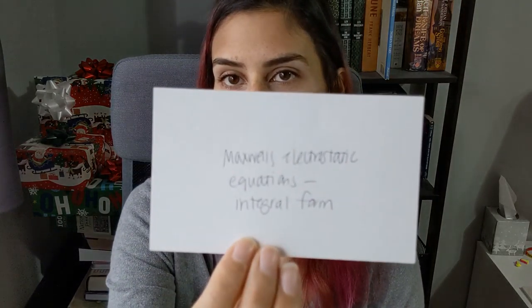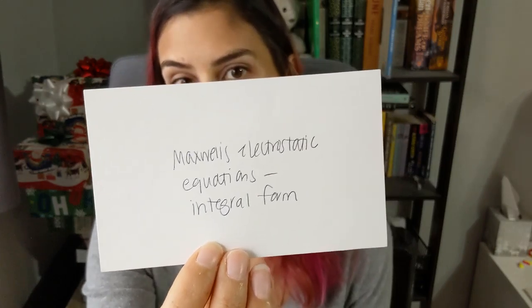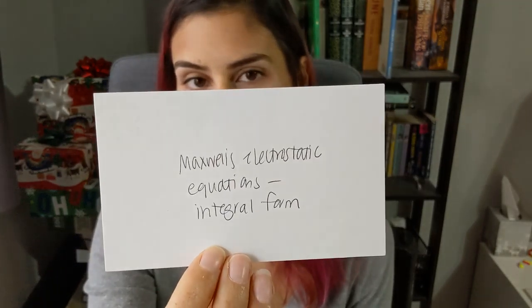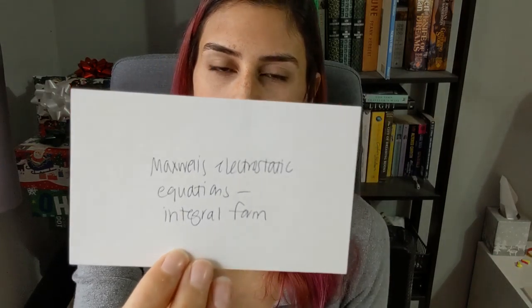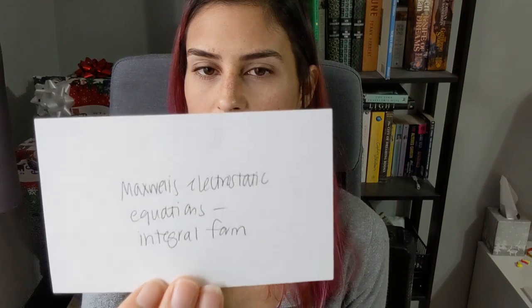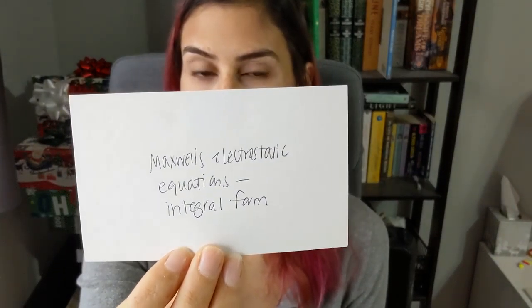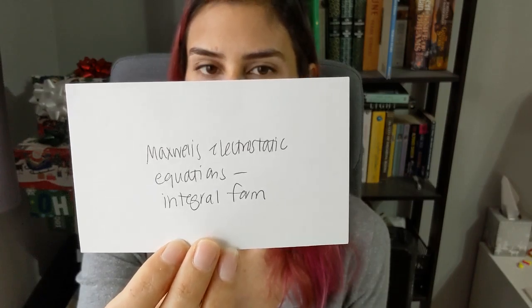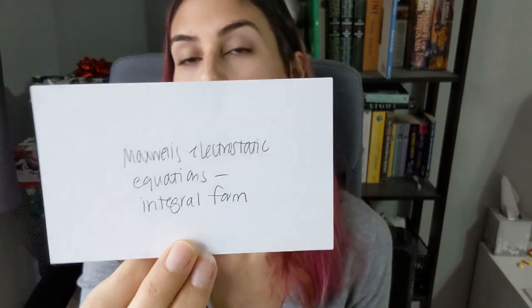Maxwell's electrostatic equations in integral form — electrostatic means no moving fields. The surface integral of E dot dS equals Q enclosed over epsilon naught, and the closed loop integral of E dot dl equals zero.